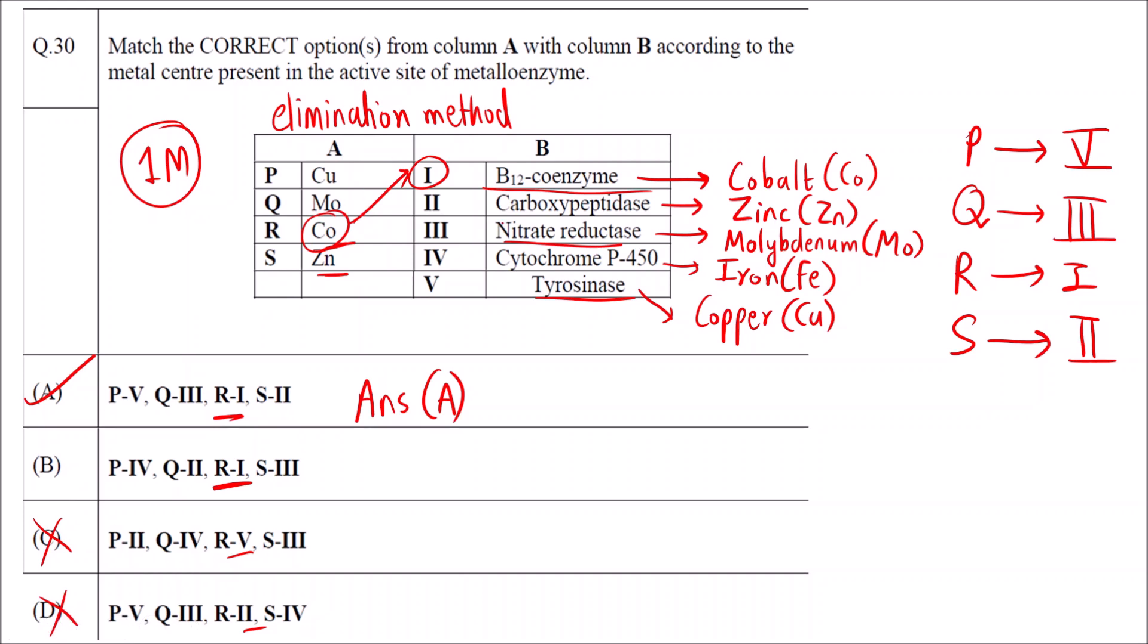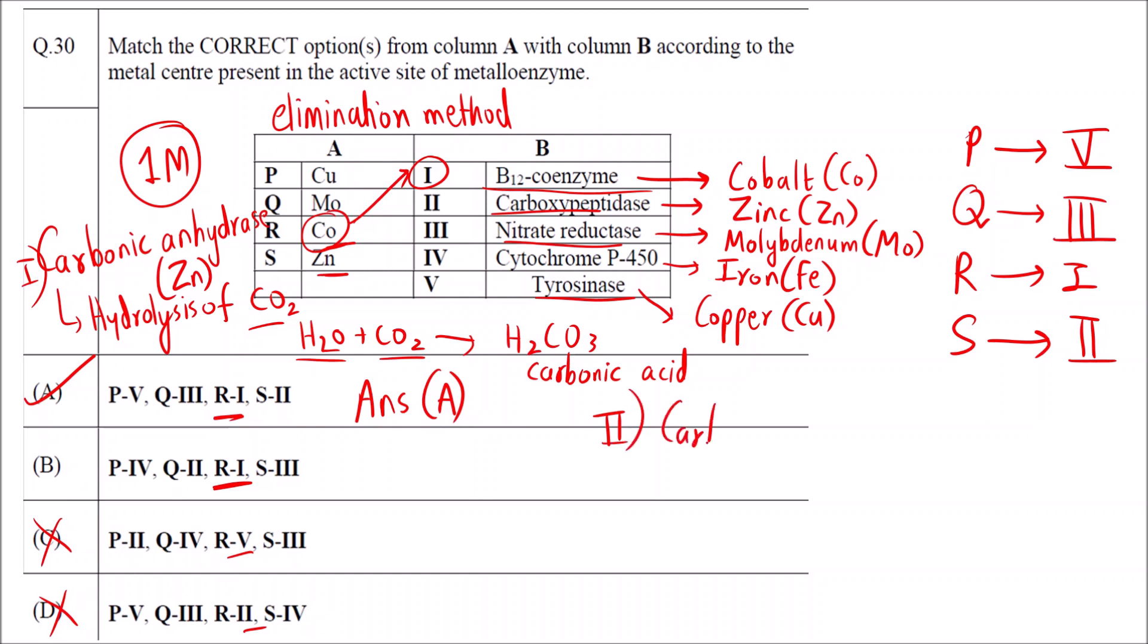Another very common enzyme that we study is carbonic anhydrase. This is used for hydrolysis of CO2. Water and CO2 combine to form H2CO3, carbonic acid. Hydrolysis means reaction with water, reaction of carbon dioxide with water gives carbonic acid. In carbonic anhydrase zinc is present. Along with carbonic anhydrase, carboxypeptidase also breaks peptide bonds and has zinc.